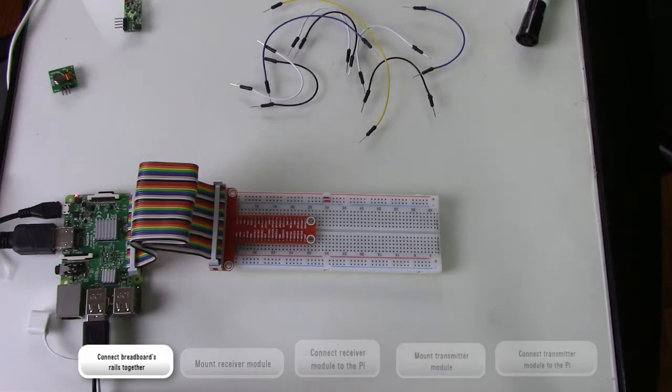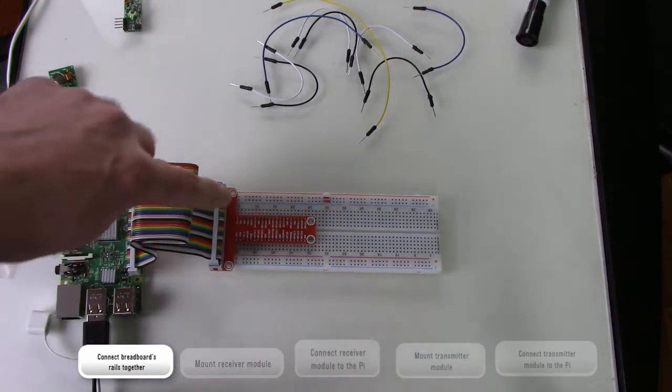Make sure the expansion board is mounted to the breadboard and connected to the Pi using the ribbon cable.